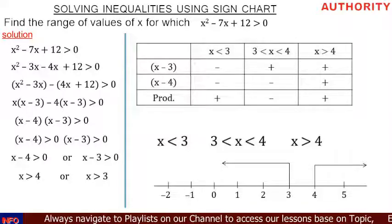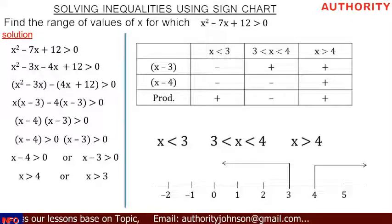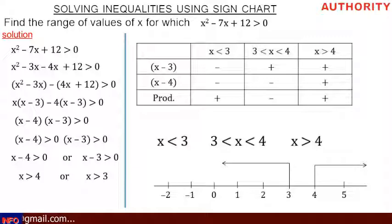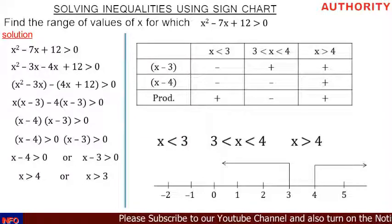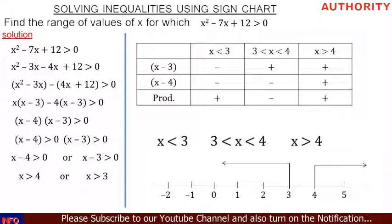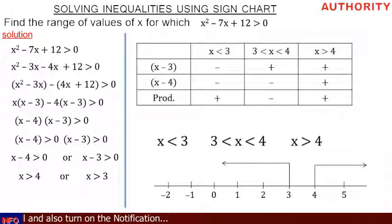Let's draw a 4 by 4 table. In the first row we write our ranges: x less than 3 in the second column, x greater than 3 but less than 4 in the third column, and x greater than 4 in the last column. In the first column we write the expressions x minus 3 and x minus 4, and under them we write their product: (x minus 3) times (x minus 4).